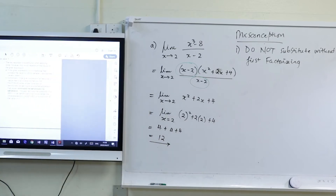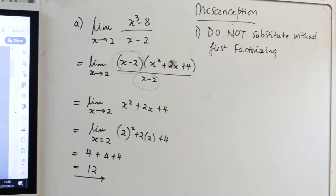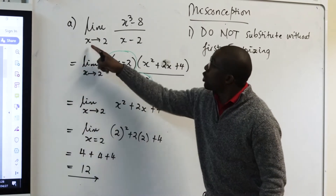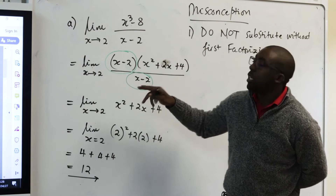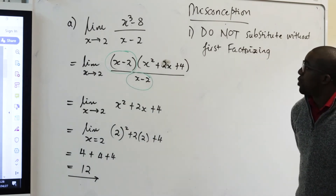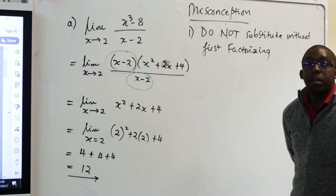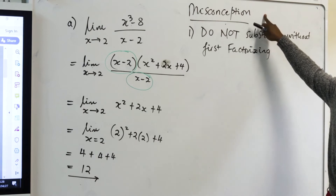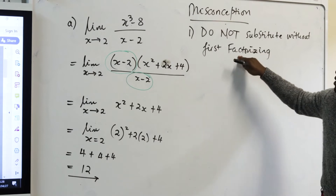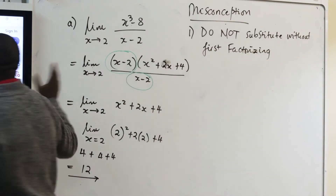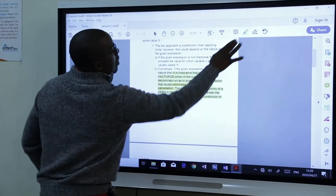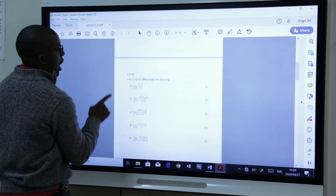The main objective was to ensure that when we eventually substitute x equals 2, we don't have the possibility of the denominator being zero. Do not substitute without first factorizing, especially if it's in the fractional format. This is the answer to Question A.